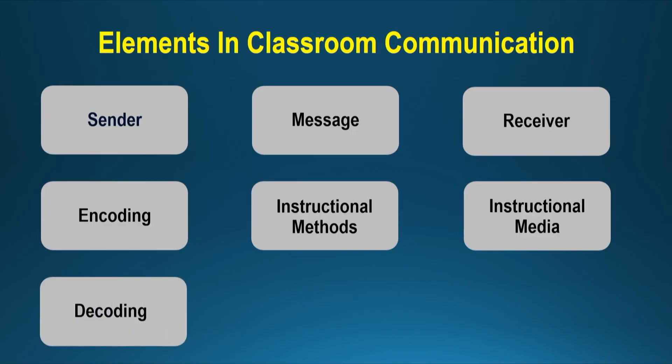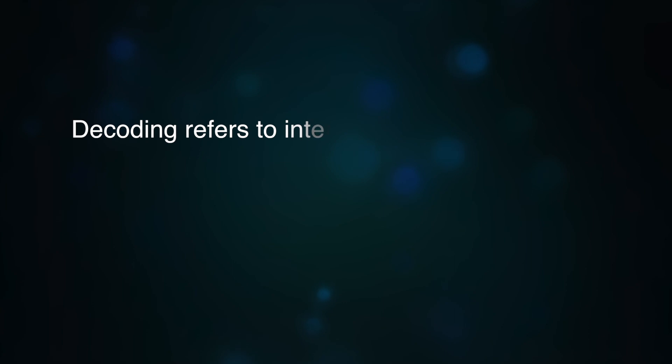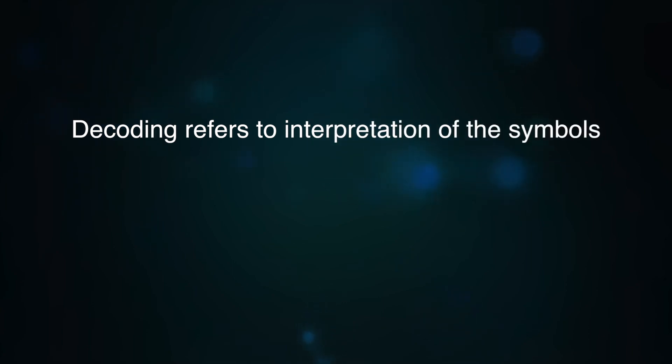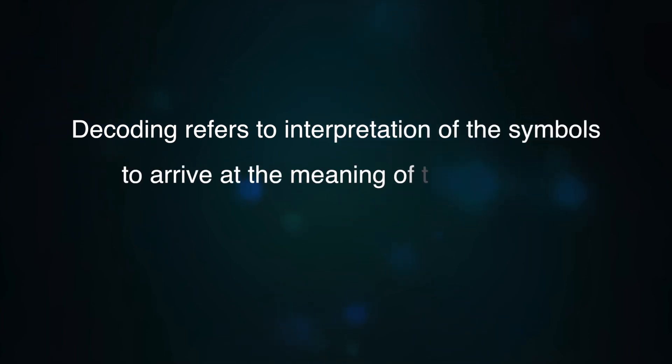Decoding is the process used by the receiver of the message. Decoding refers to interpretation of the symbols to arrive at the meaning of that symbol. In a classroom situation, as noted, there can be role reversal, so both teacher and student at different points of time can be involved in the process of decoding as the receiver of the message.